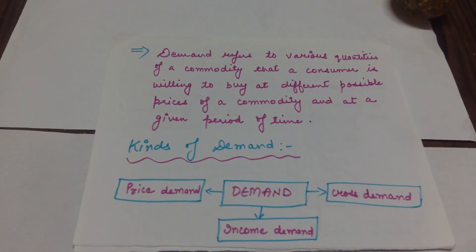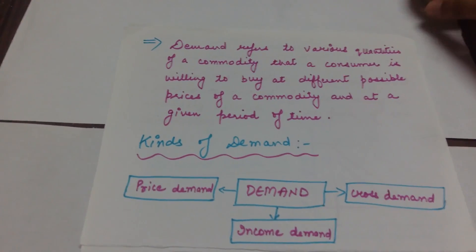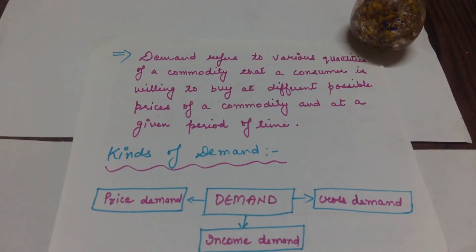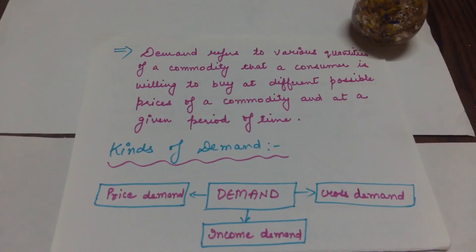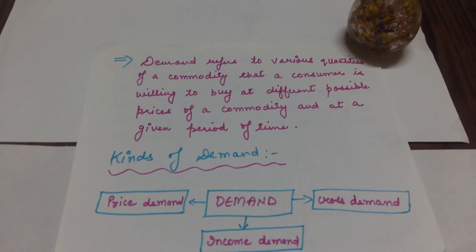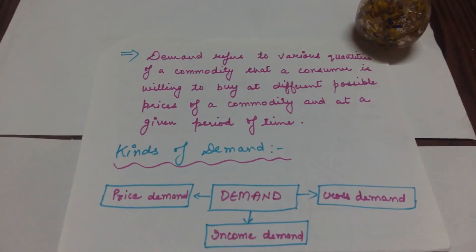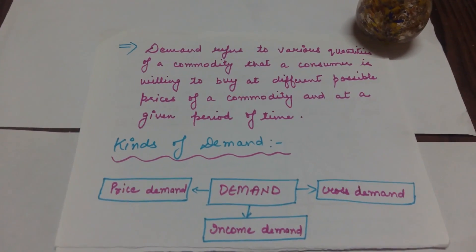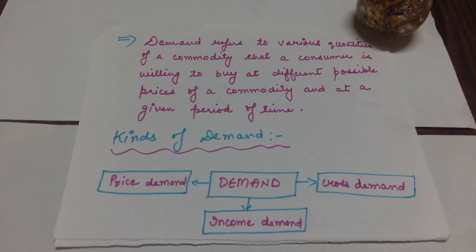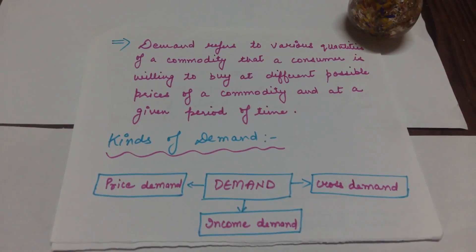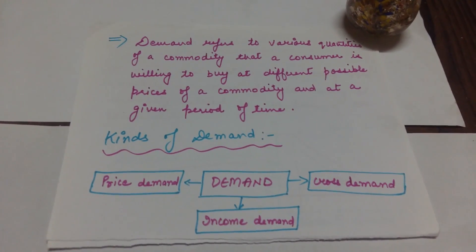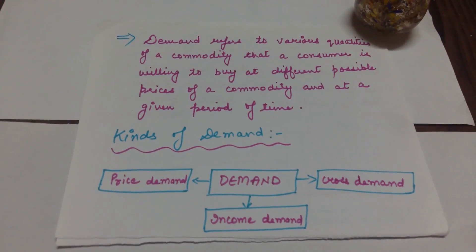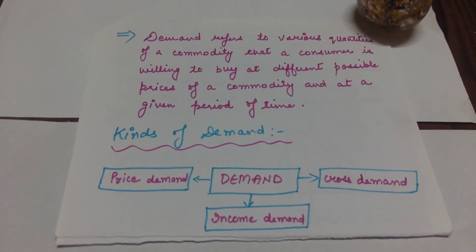Next is the definition of demand. Demand refers to various quantities of a commodity that a consumer is willing to buy at different possible prices of a commodity and at a given period of time. Kinds of demand — three types: price demand, income demand, and cross demand. We will discuss all these things in the further videos.